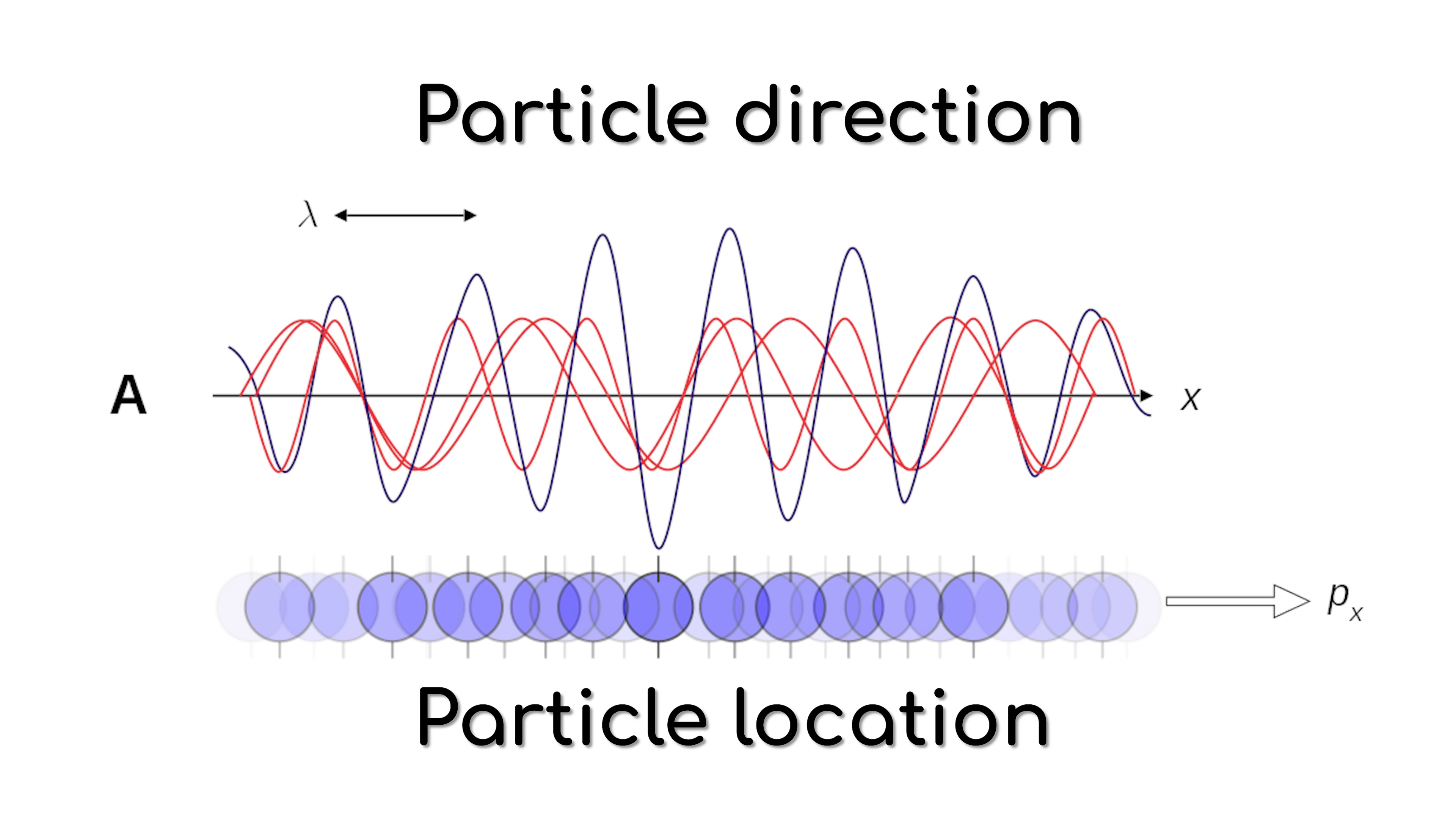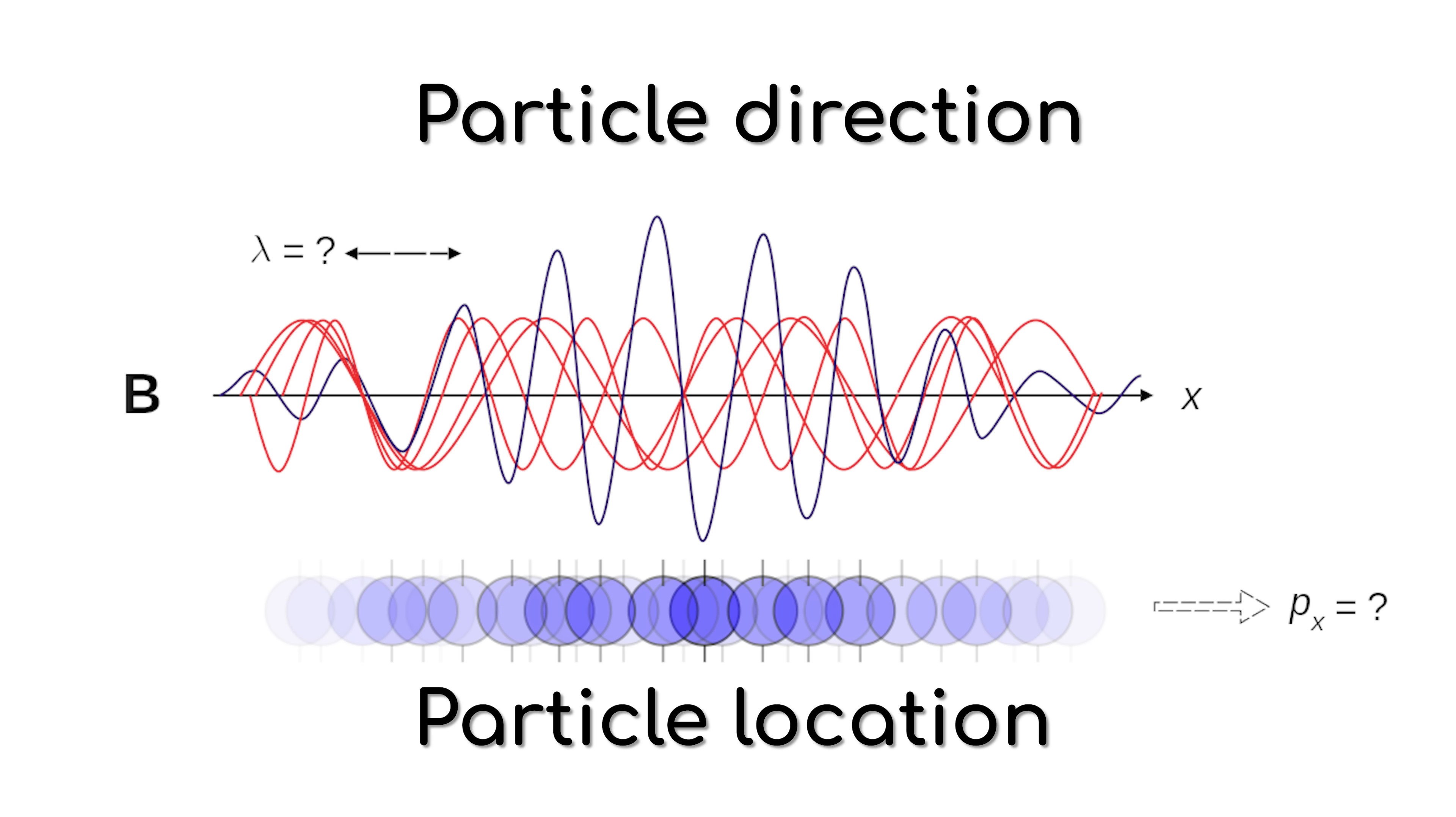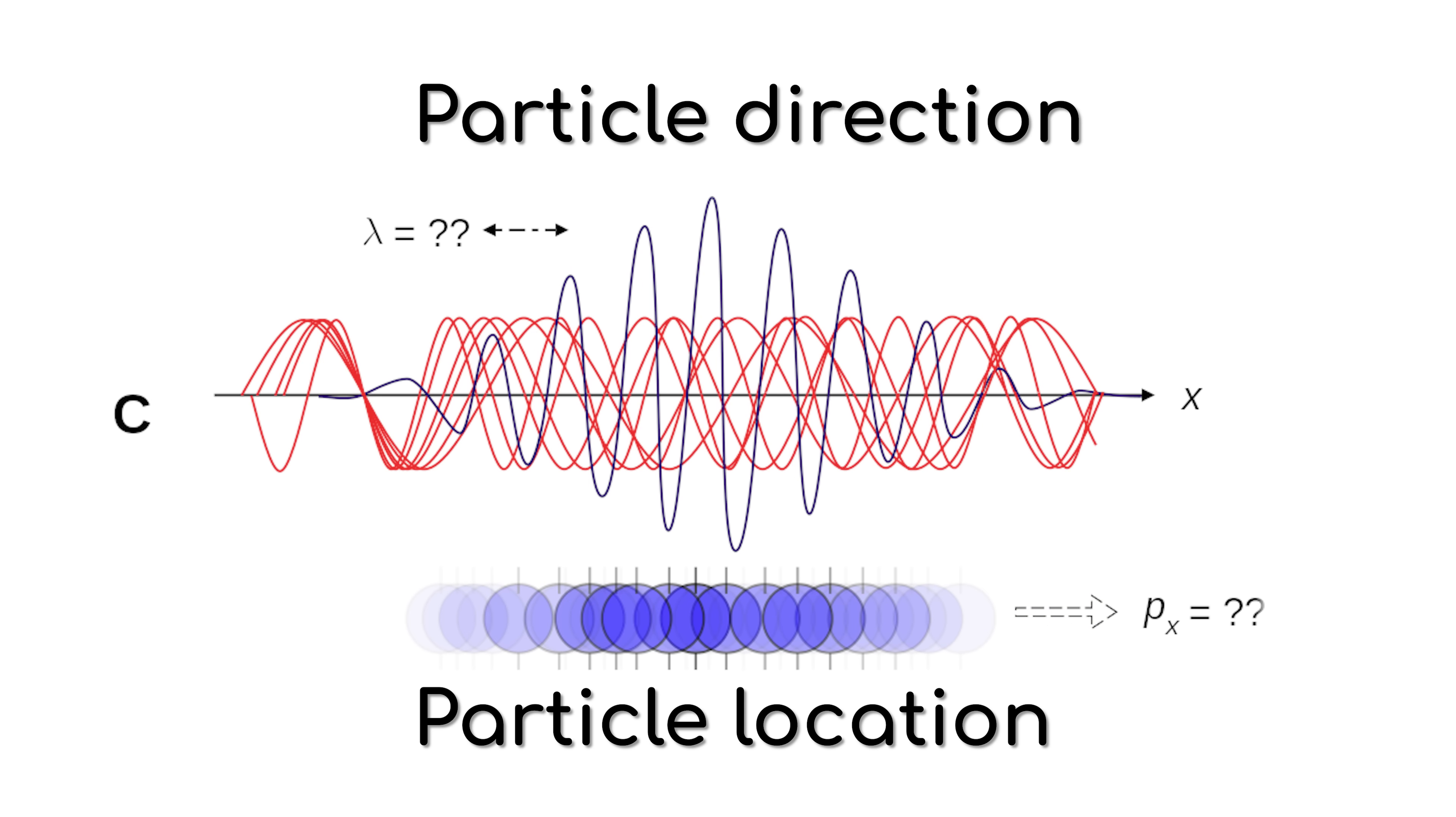Because it is so small, as soon as you try to figure out the location of an electron, it bounces off whatever you are trying to use to measure it, so you can no longer be sure of its direction of travel. If you know its direction, according to this principle, you can't know its location.